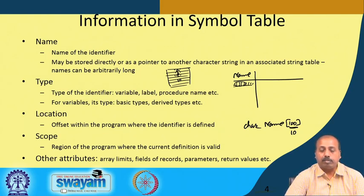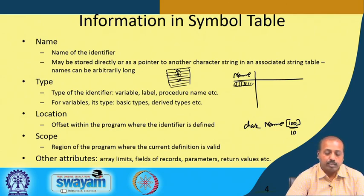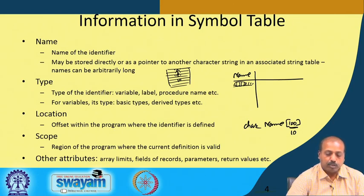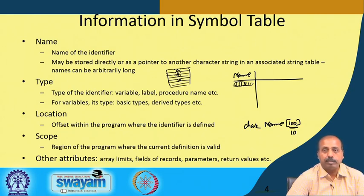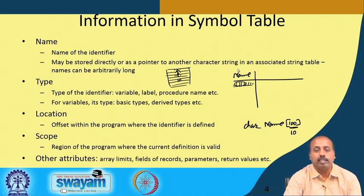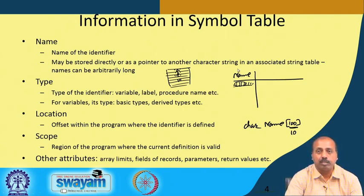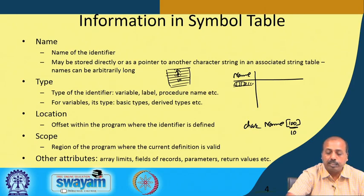These are just typical entries; a compiler designer may think of additional attributes or consider some redundant. It also depends on the language — for instance, a language that does not support records has no need for record field storage in the symbol table. Symbol table design is dictated by the programming language and is also a choice of the compiler designer.